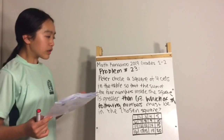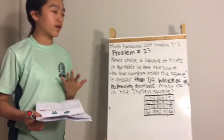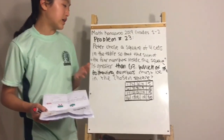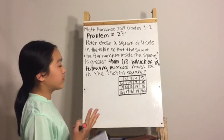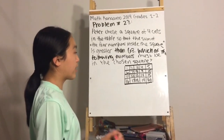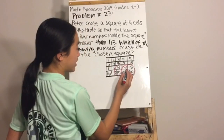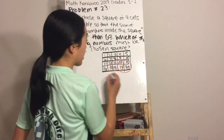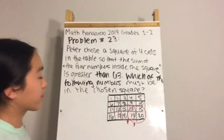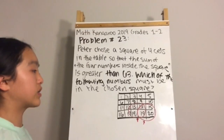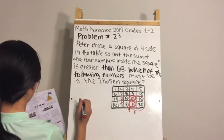Problem number twenty-three: Peter chose a square of four cells where the sum is greater than 63 — which number must be in the chosen square? Only two groups of cells add up to more than 63, and the numbers they have in common are in the center overlap. Since 19 is not an option, the answer must be 14, letter A.